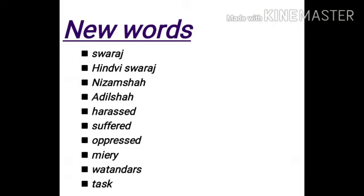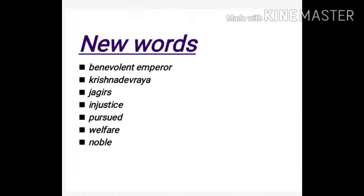Next is vatandars — V-A-T-A-N-D-A-R-S — vatandars. Vatandars means rich people who had more property. Next is task — task means work. Next is benevolent emperor — B-E-N-E-V-O-L-E-N-T E-M-P-E-R-O-R — benevolent emperor means a loyal and good ruler.